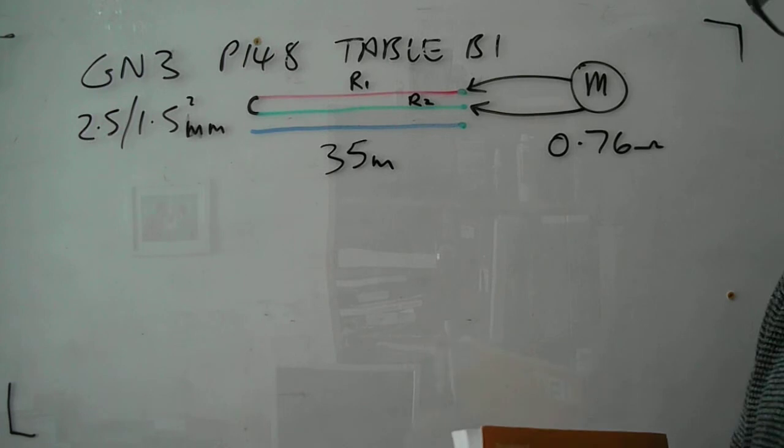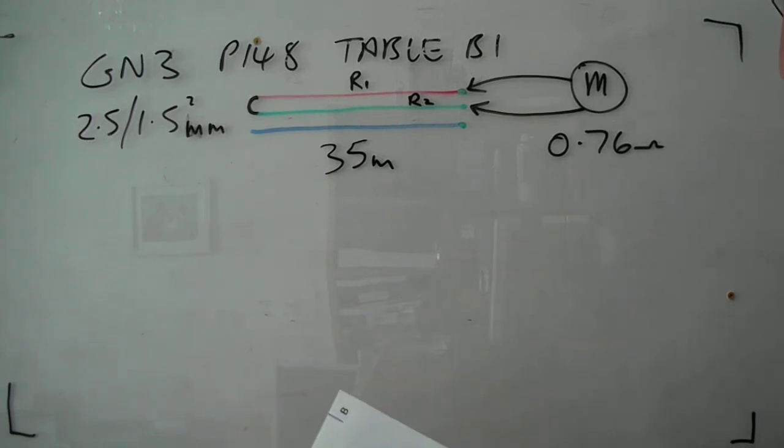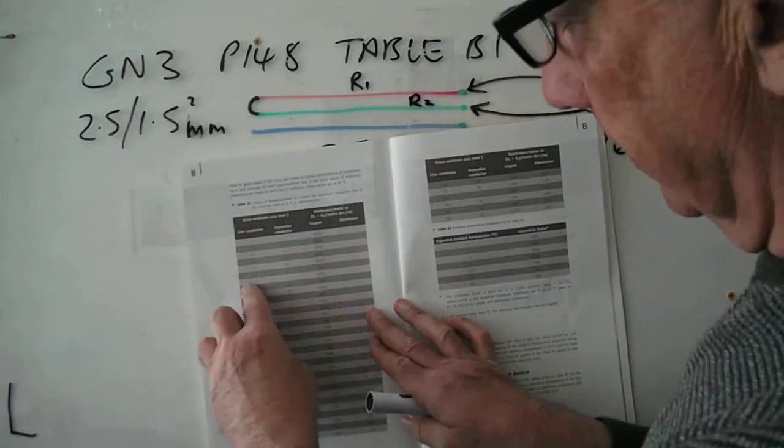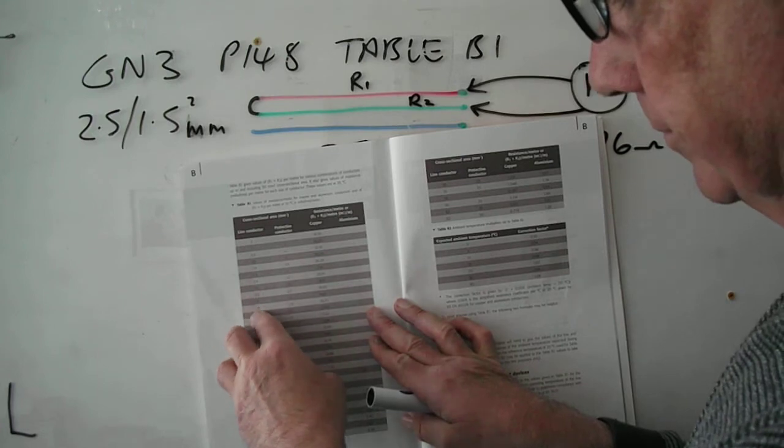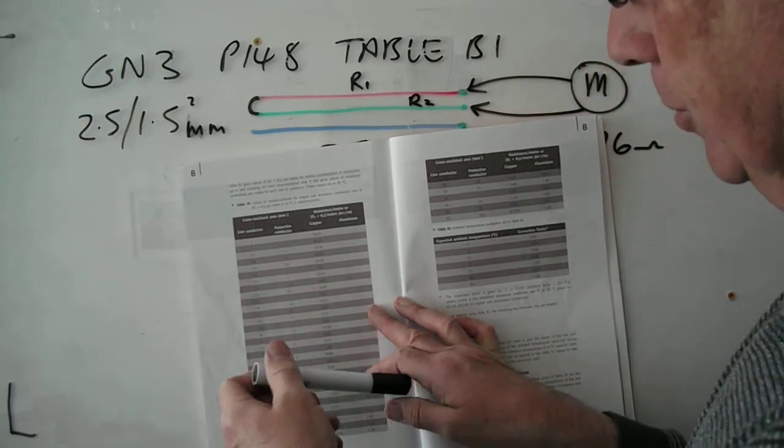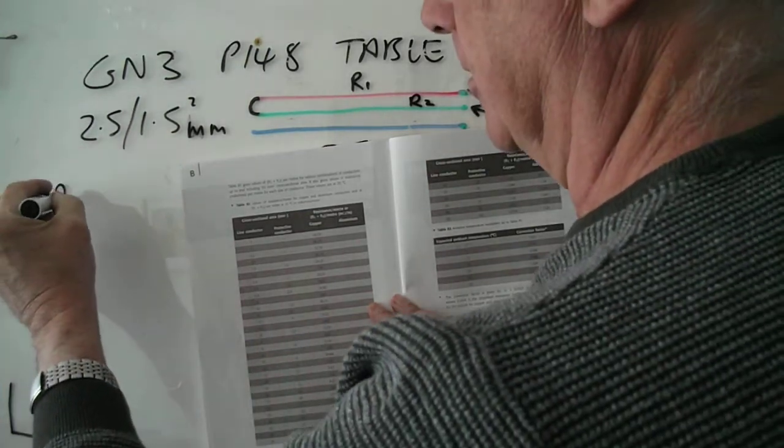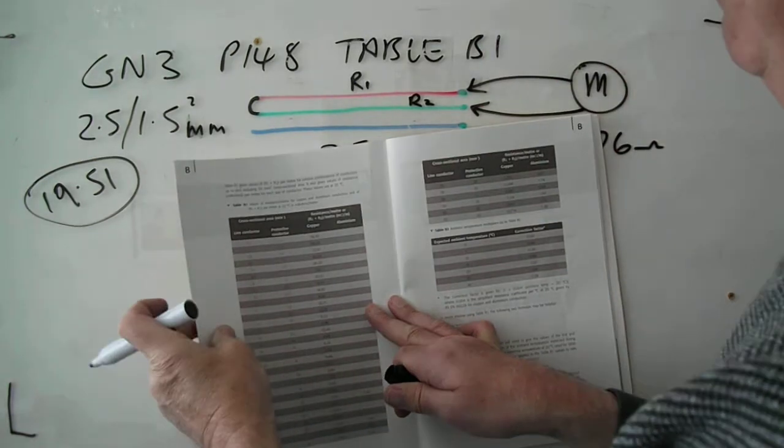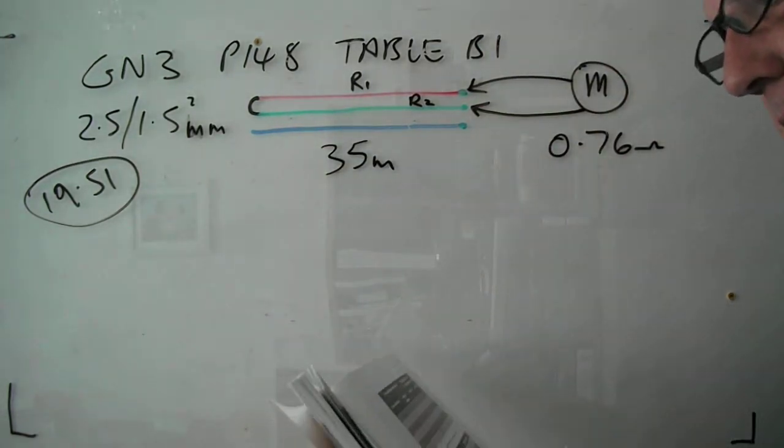OK, so the way we can find that out is to look in table B1 again and look down for 2.5 and 1.5 cable which is here. And the figure in the book is 19.51 milliohms per metre.